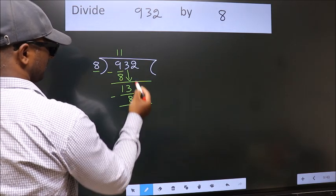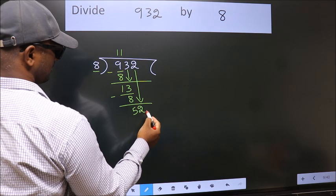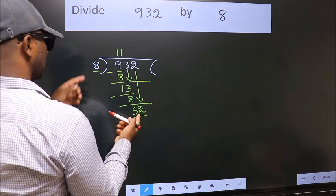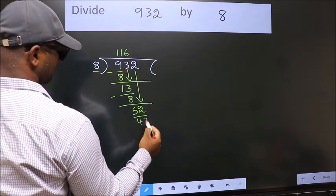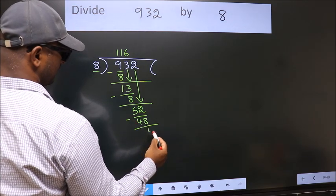After this, bring down the beside number. So 2 down. So 52. A number close to 52 in 8 table is 8, 6, 48. Now we subtract. We get 4.